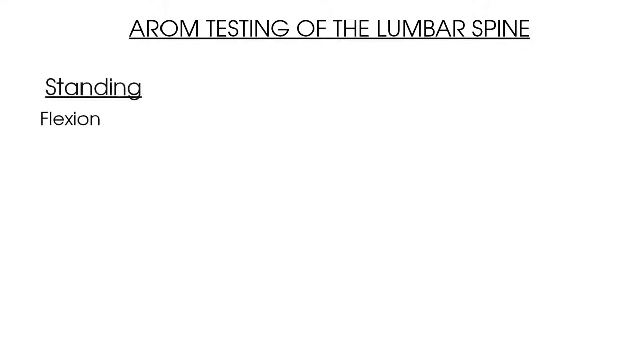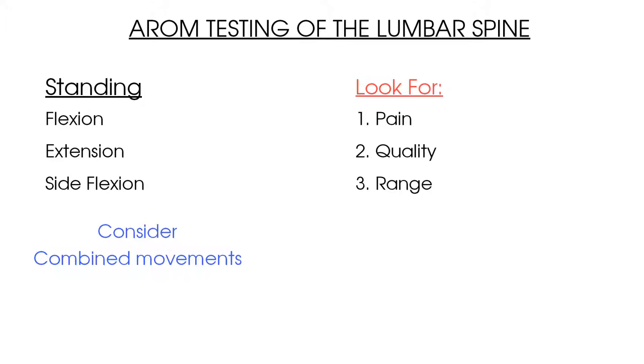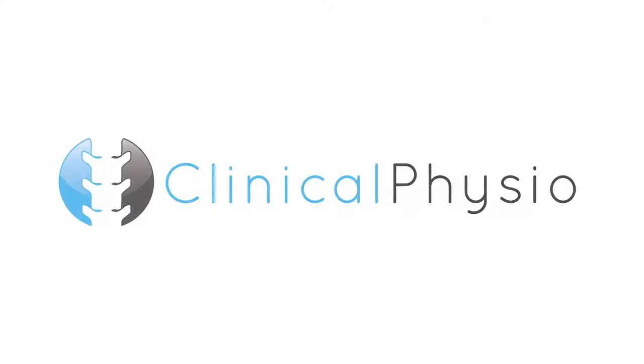Let's summarise this video on active range of movement testing of the lumbar spine. Look at your patient's active range of movement in standing, testing lumbar spine flexion, extension, and side flexion to both the right and left sides, potentially adding in combined movements as well. Remember that you are looking out for P, Q, and R — pain, quality, and range. When you look out for changes in quality mechanisms with each movement, see if you can change your patient's movement pattern and see how this influences their symptoms and therefore your treatment. Thank you so much for watching, and we'll see you again soon right here on Clinical Physio.